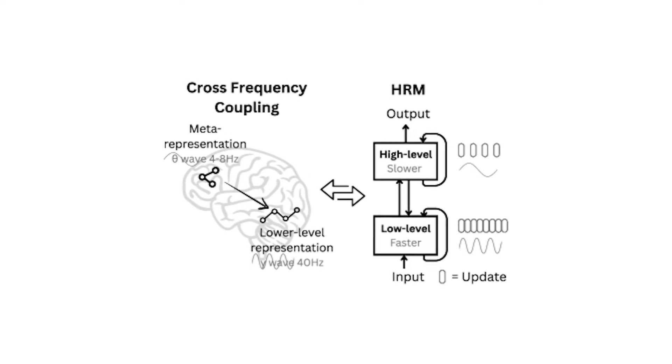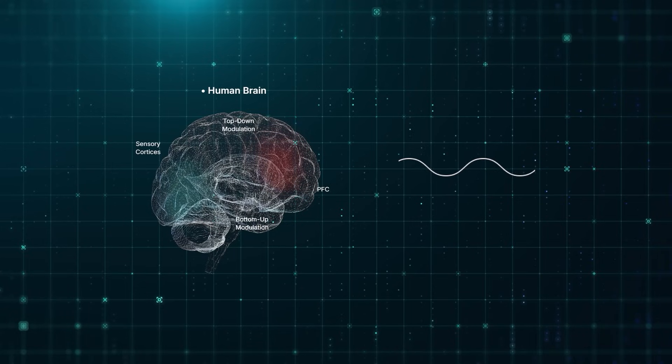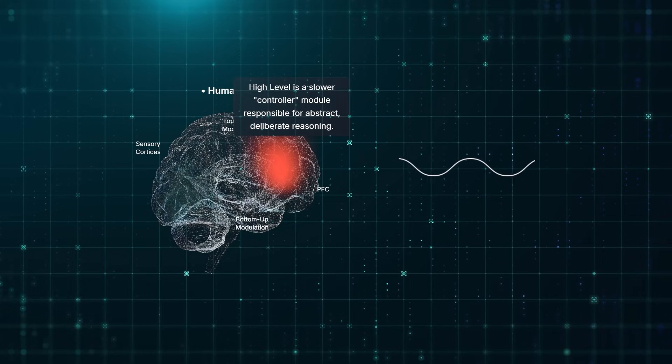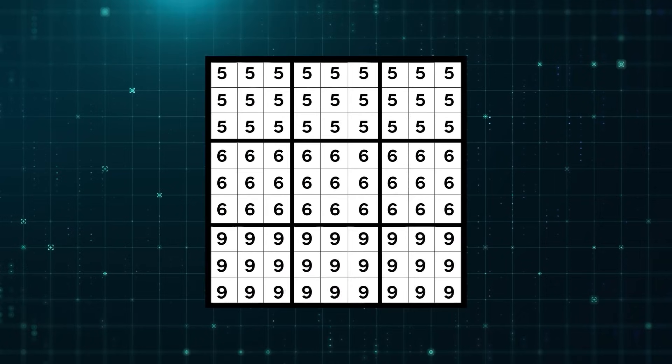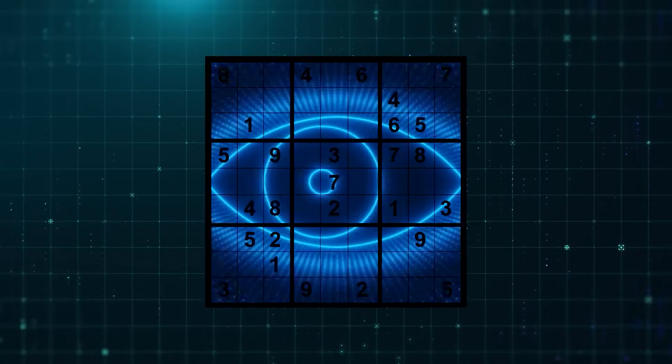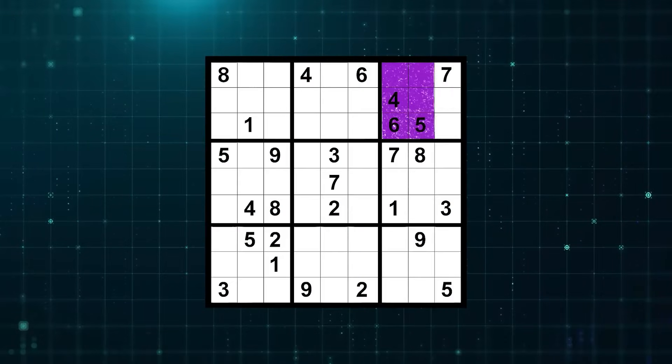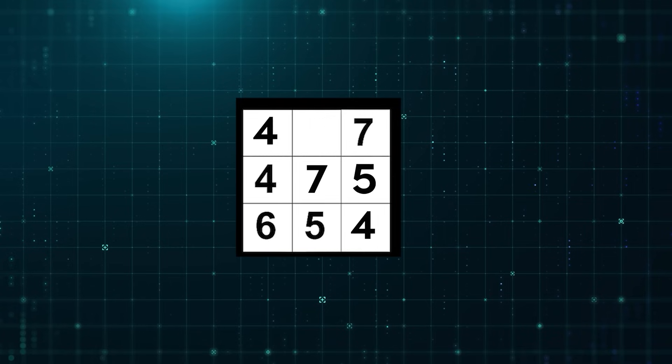First, you have the high-level or the H-module. Let's call it the CEO. The CEO is the strategist. It operates on a slow timescale, thinking deliberately about the big picture. The CEO doesn't get its hands dirty filling in the individual numbers in the Sudoku grid. Instead, it looks at the entire board and makes a strategic judgment. Like that top right box is nearly full. It's the most constrained area and probably the key to unlocking the next wave of deductions. Let's focus all of our energy there for a while.